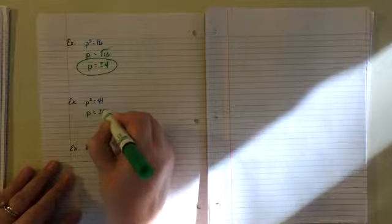p squared equals 41. We take the square root of both sides. We get p equals plus or minus the square root of 41. And there's nothing we can do with the square root of 41, it's just going to stay the square root of 41.